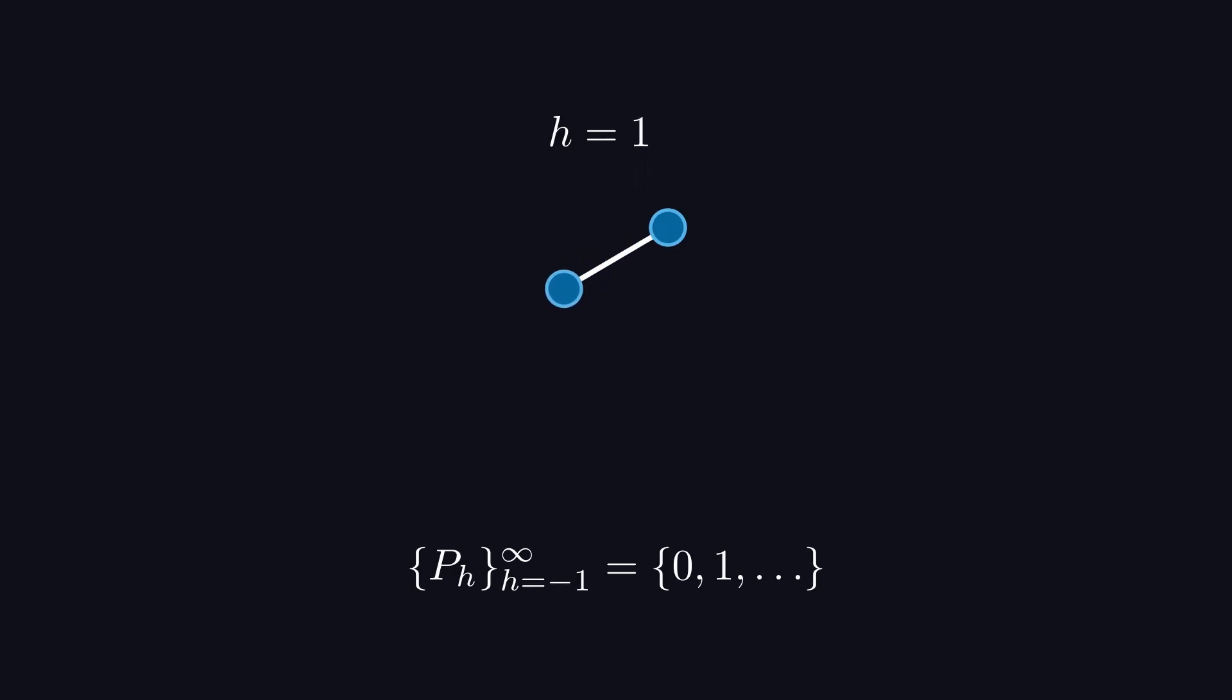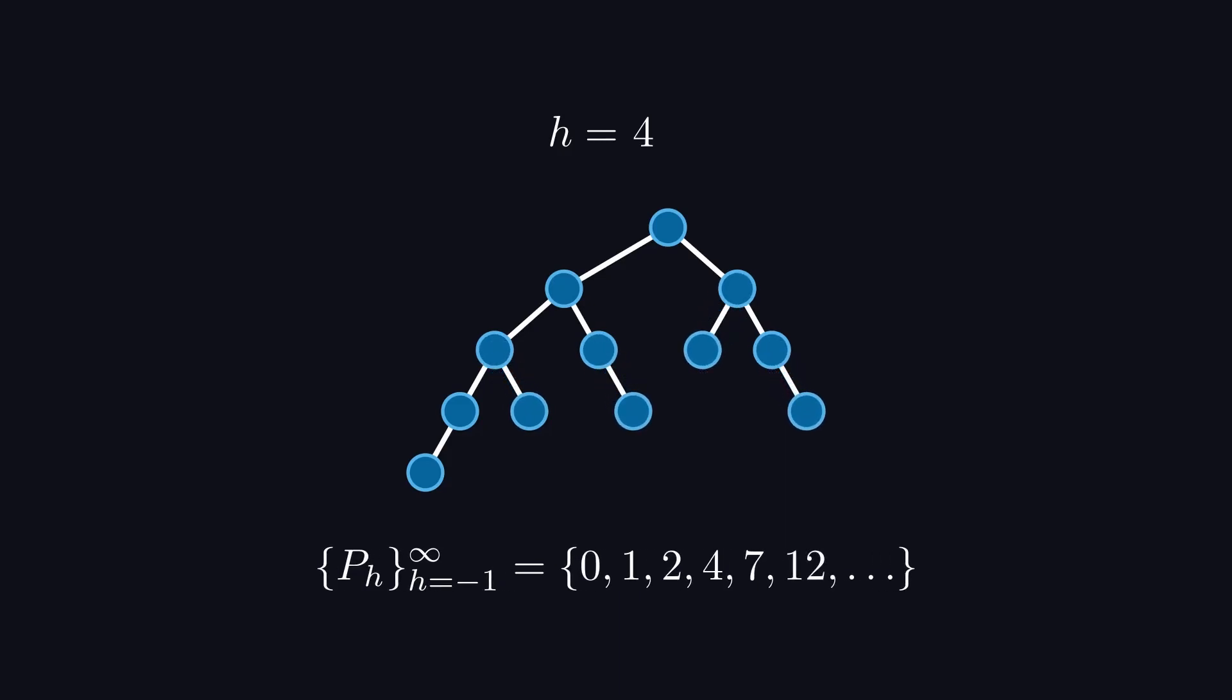For h equals 1, the minimum number of nodes is 2, one on each level. Moving onto h equals 2, we can't just have a single line of nodes again, because then the heights of the left and right subtrees differ by 2, which violates the height balancing rule. To correct this, we need to add another node here, balancing out the tree for a total of 4 nodes. Next is h equals 3, and once again, we can add nodes to keep the tree balanced, like this. So p_3 is equal to 7. The process is the same for h equals 4, but I'll spare you all the details and just show you that the tree needs at least 12 nodes. Now, this is a perfectly valid way to generate these size-minimized balanced trees, but it will take exponentially longer to do so as the height increases. So we'll need a better way.